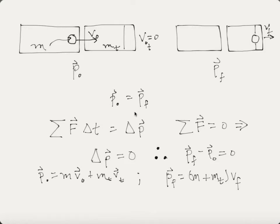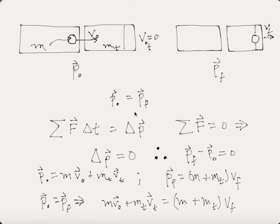Since initial momentum equals final momentum, we have: m_b·v₀ + m_t·v_t = (m_b + m_t)·v_f. The initial velocity of the tube is zero, so that term goes to zero. If we're looking for v₀, we divide both sides by m_b to get v₀ by itself.